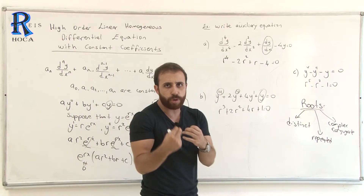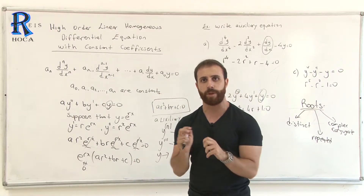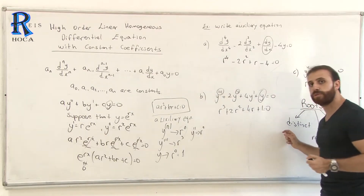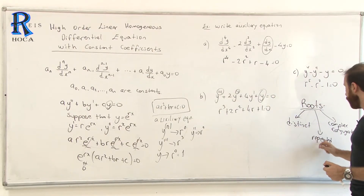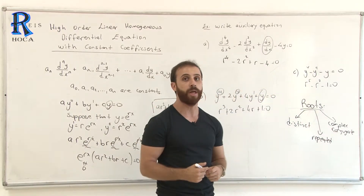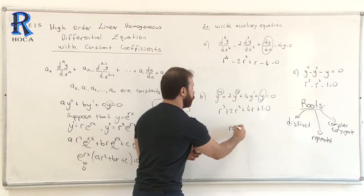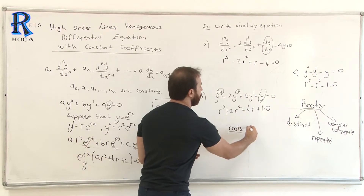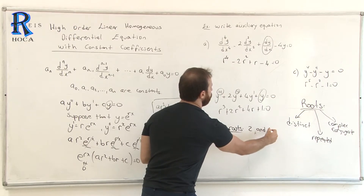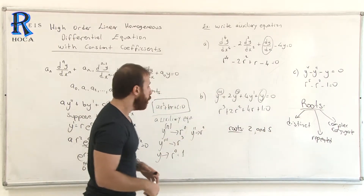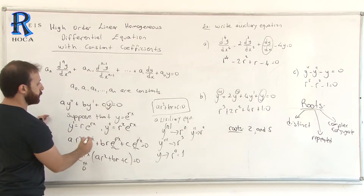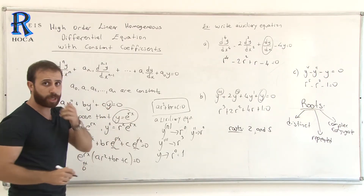We will learn about each case. In the next video we will cover distinct roots, then repeated roots, then complex conjugate roots. For example, suppose we find roots r = 2 and r = 5. The theory states that y = e^(rx), so the two solutions are e^(2x) and e^(5x).